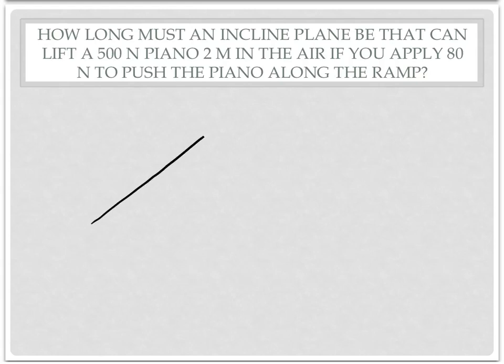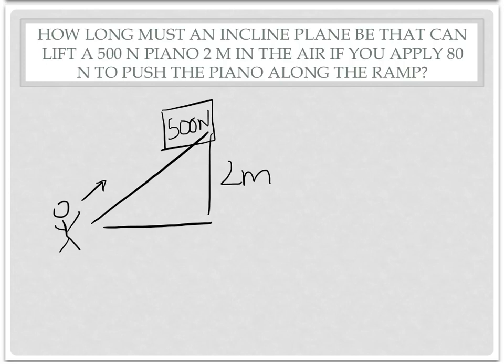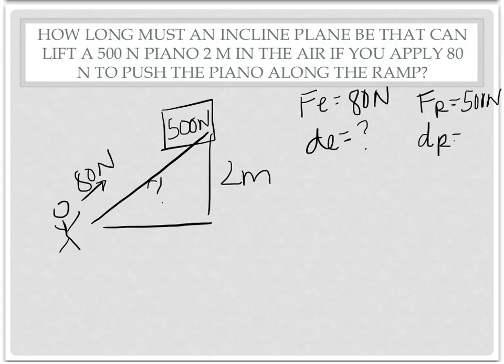How long must an inclined plane be that can lift a 500 Newton piano? I can't draw a piano, so we're just going to draw a box. So there's our 500 Newton piano, two meters in the air, so that's going to be the height of our ramp. If you apply, here's you, 80 Newtons of force along the ramp. Our question mark is our length of the ramp. So that means FE equals 80 Newtons, DE equals question mark, FR equals 500 Newtons, and DR equals 2 meters.